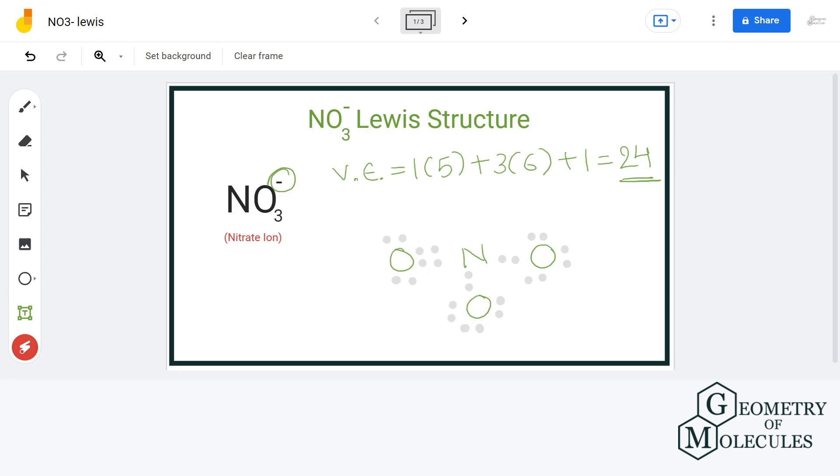Now we know that the sum of formal charges must be equal to the overall charge of the ion. So let us calculate formal charge of each atom and see if we have the right Lewis structure.